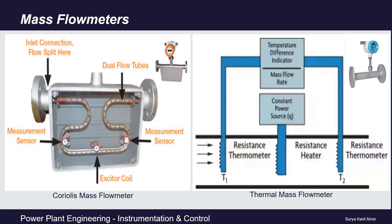All the flow meters discussed so far — velocity type, variable area, and differential pressure — measure volumetric flow. Volumetric flow rate varies with temperature and pressure, so additional temperature and pressure compensation is required. Another important type are mass flow meters, which measure direct mass flow independent of temperature and pressure variations. Examples include Coriolis mass flow meters and thermal mass flow meters.